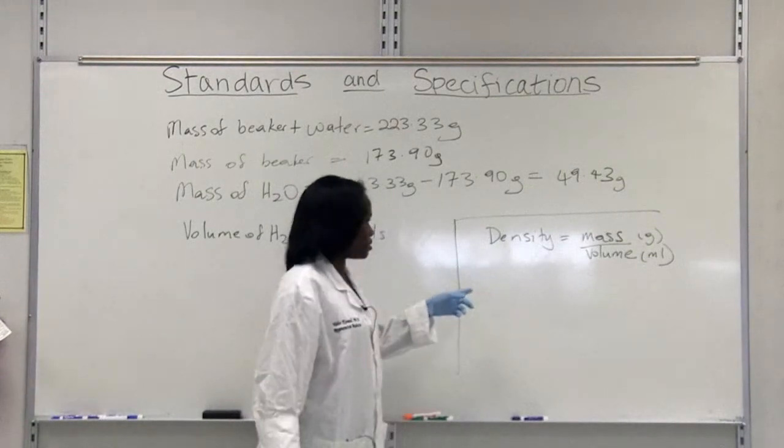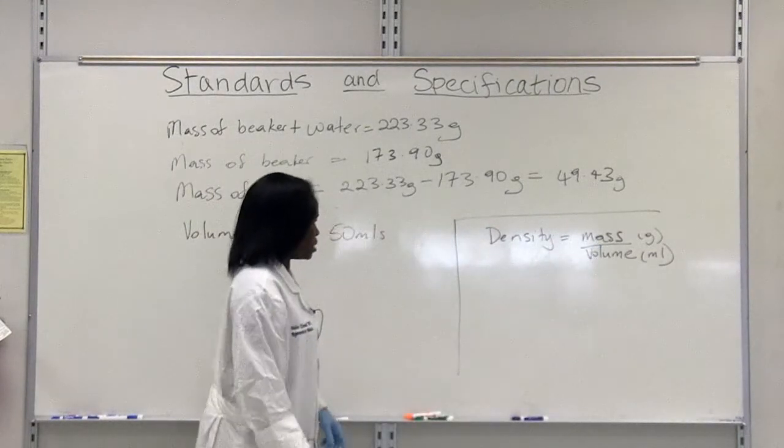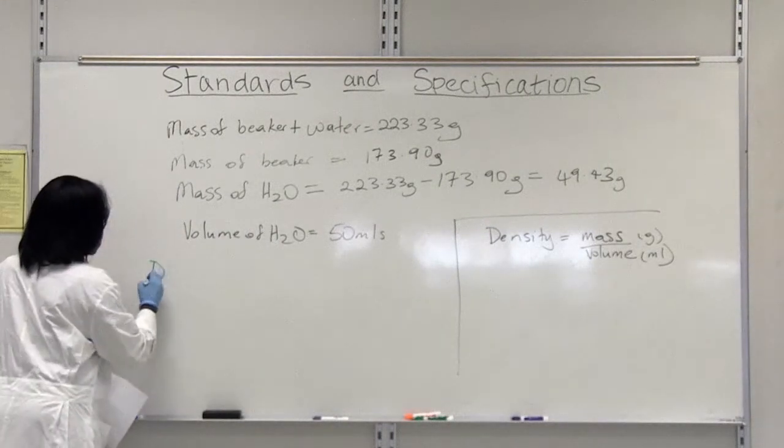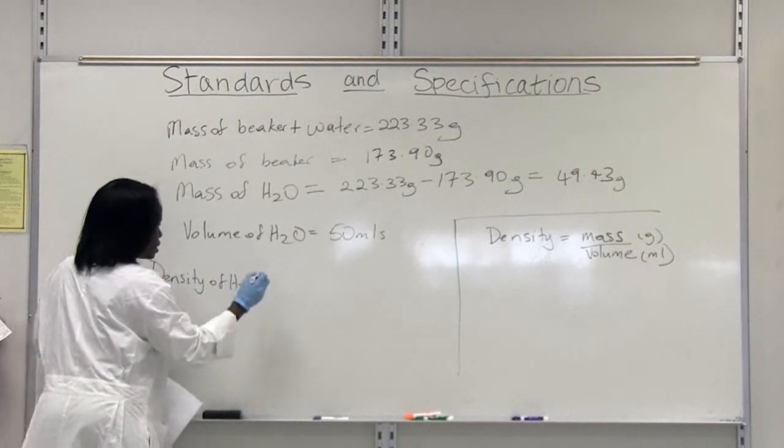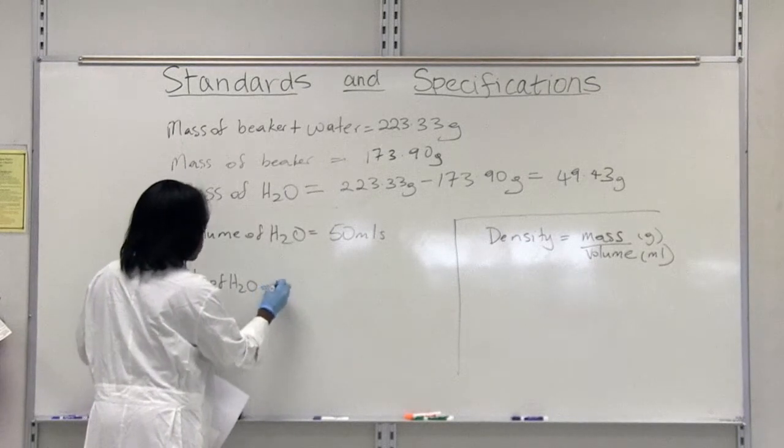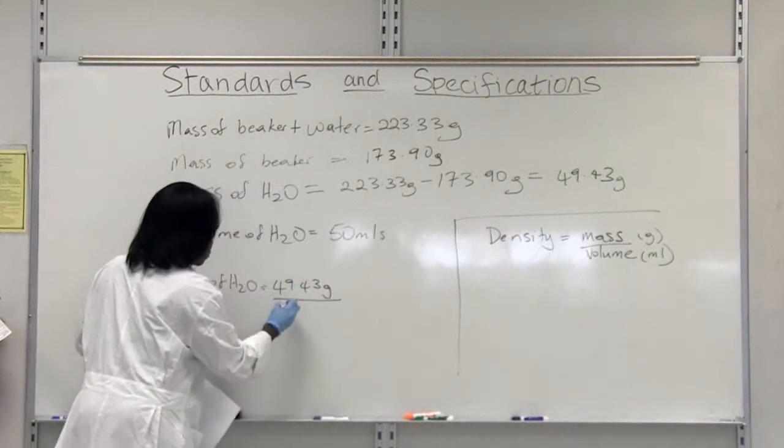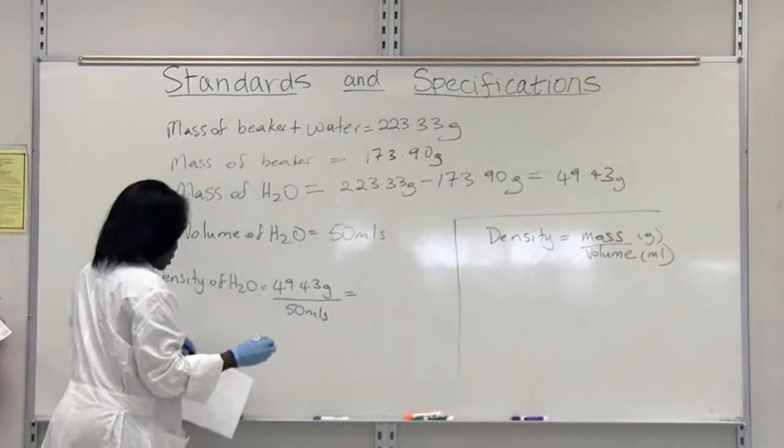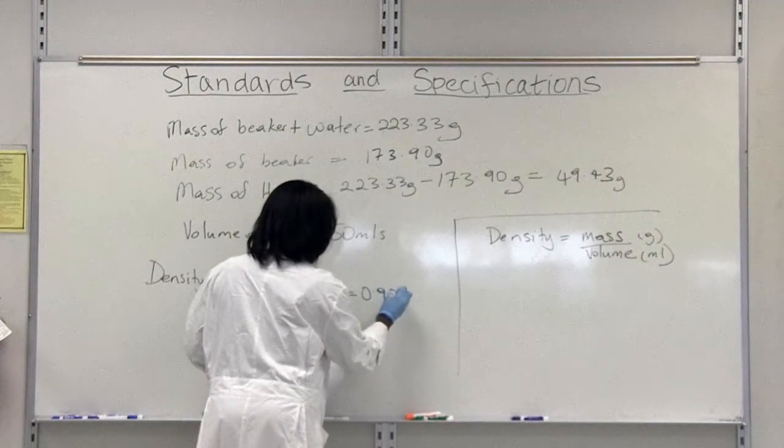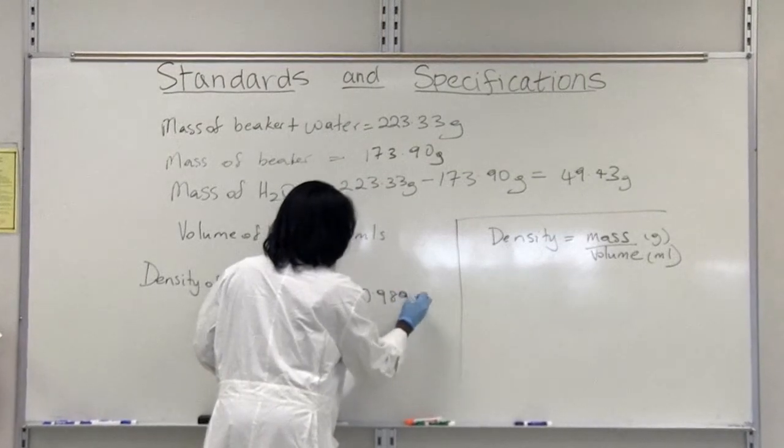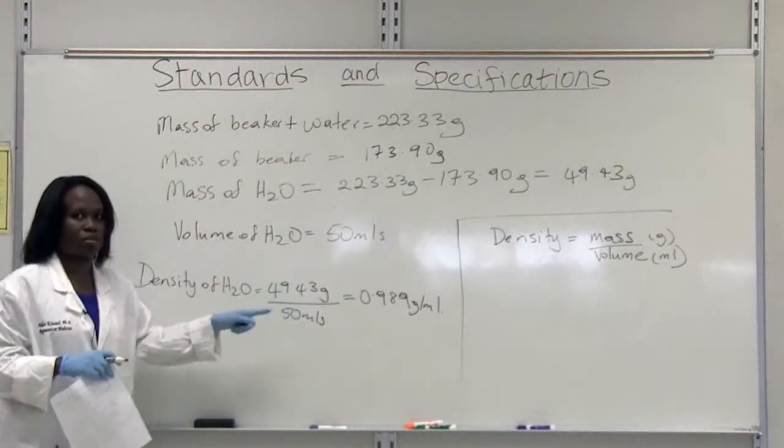So this is the equation that you have seen already. Density is equal to mass in grams over volume in mils. So in our case, the density of water is equal to the mass of water, which is 49.43. That's what we obtained over 50 mils. And when we use our calculator, we get 0.989 grams per mil. So that is the density of water that we calculated based on our experimental data.